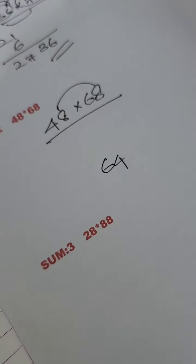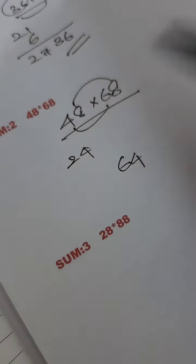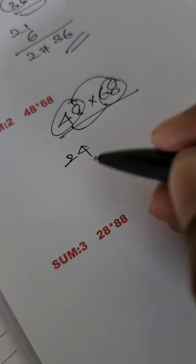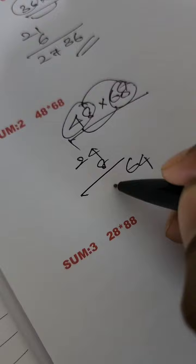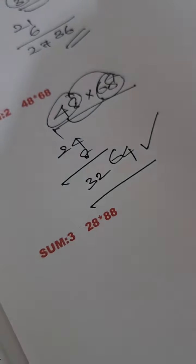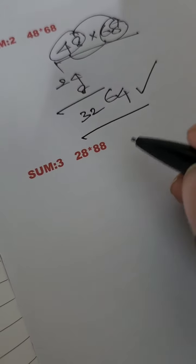The answer is 64. Then multiply 6 into 4, answer is 24. What is the common value in 68 and 48? 8 is there, right. So what is the answer? 12, 32. Answer is 32 64. Same steps.